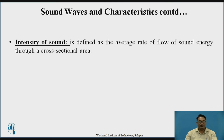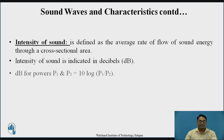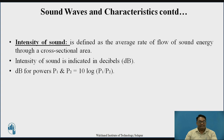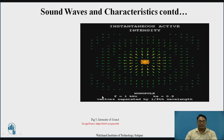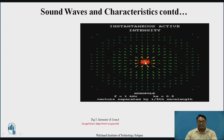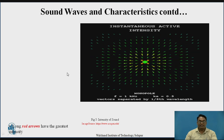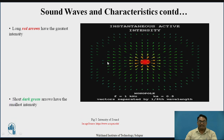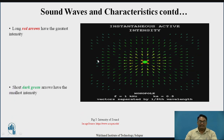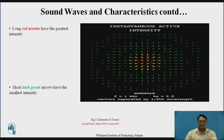Intensity of sound is also one of the characteristics of sound. It can be defined as the average rate of flow of sound energy through the cross-sectional area. It is calculated in terms of power as: P1/P2 = log(P1/P2), where P1 and P2 are initial and final power. In terms of amplitude, the intensity of the sound can also be calculated as 20 × log(A1/A2). This diagram shows the sound source from which sound is radiating — the red arrows denote sound with higher intensity, and the dark green arrows denote sound with smaller intensity.